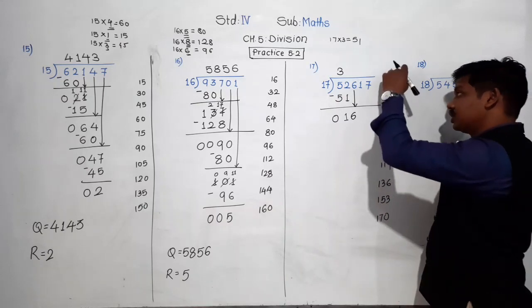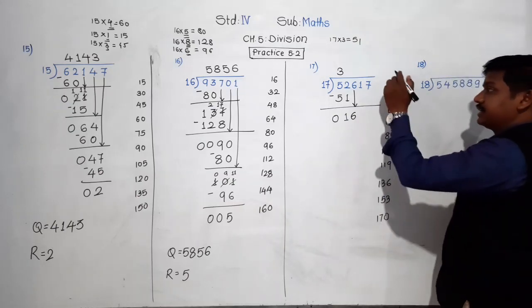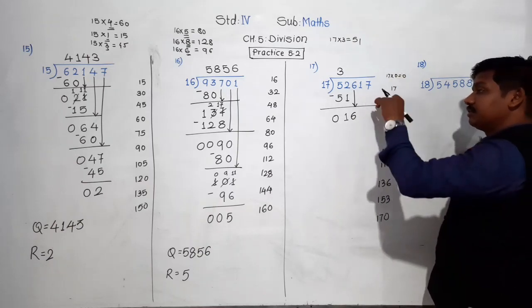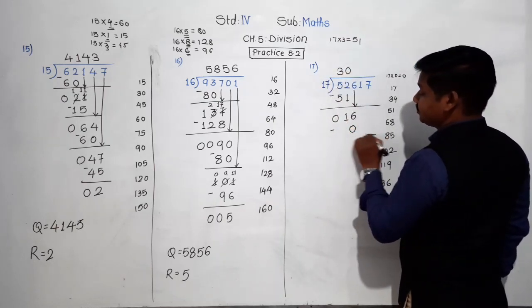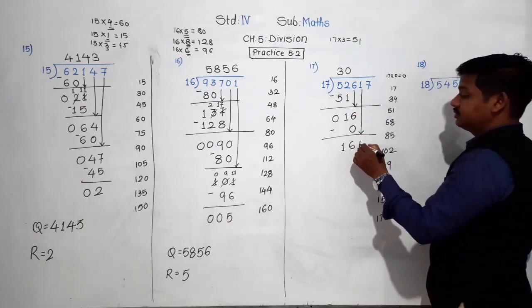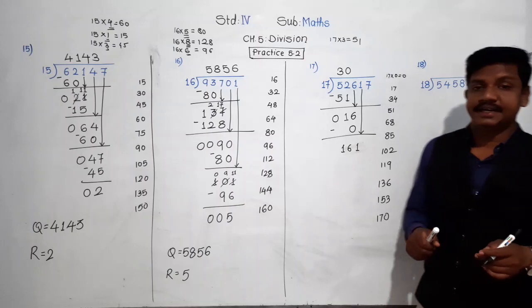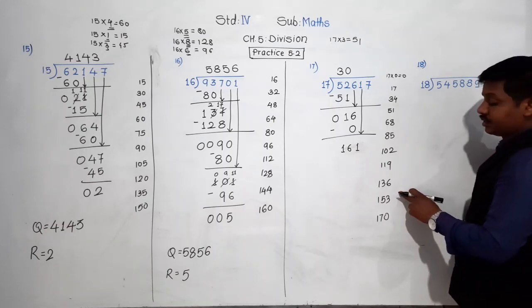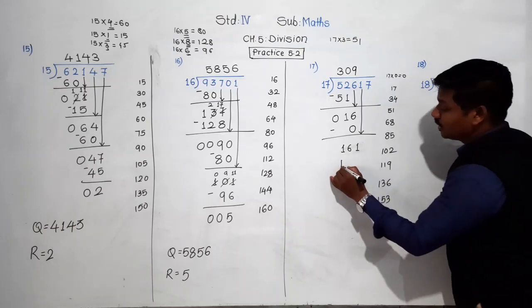16 is smaller than 17, so it is not in the table of 17. The smaller number than 16 in the table of 17 is 0. 17 zeros are 0. So 0 goes in the quotient, and 16 minus 0 is 16. Bring the next digit 1 down — the number becomes 161. Is there 161 in the table of 17? No. The smaller number than 161 is 153. 17 nines are 153. So 9 goes in the quotient.